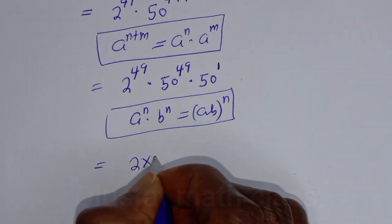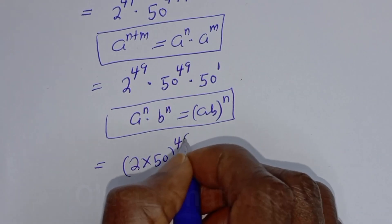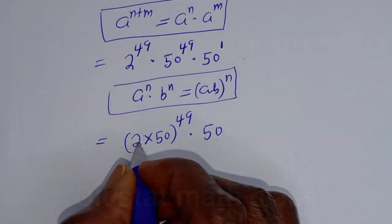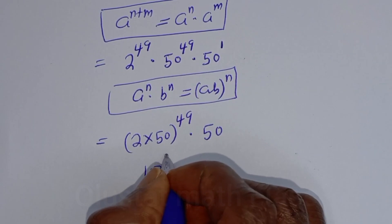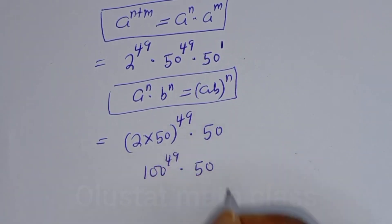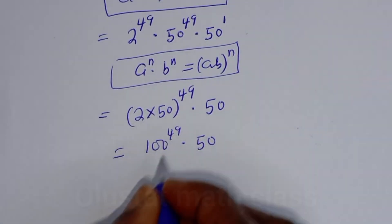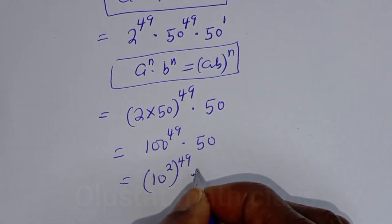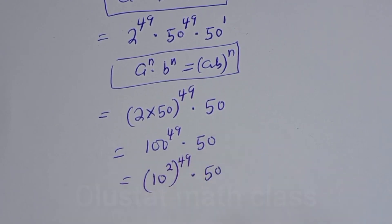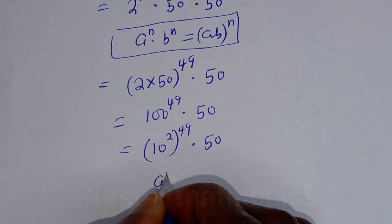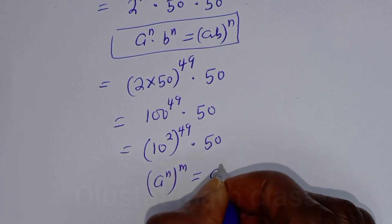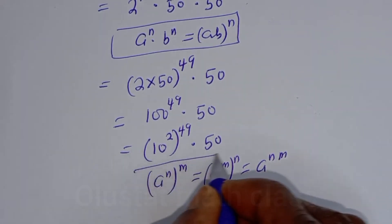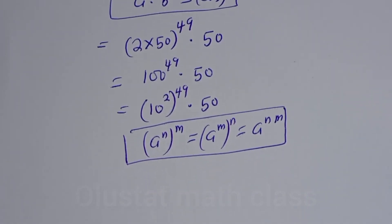2 multiplied by 50 to the power of 49, multiplied by 50. Then 2 times 50 is 100, so we get 100 to the power of 49 multiplied by 50. Then 100 can be written as 10 squared to the power of 49. If you have a raised to power m to the power of n, this is equal to a raised to power m times n.